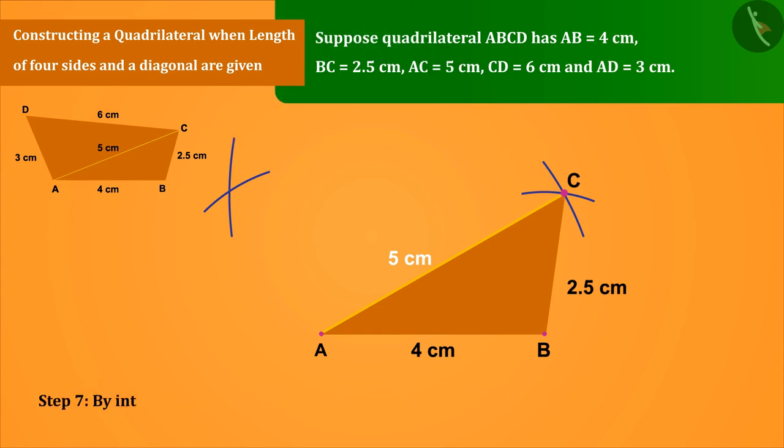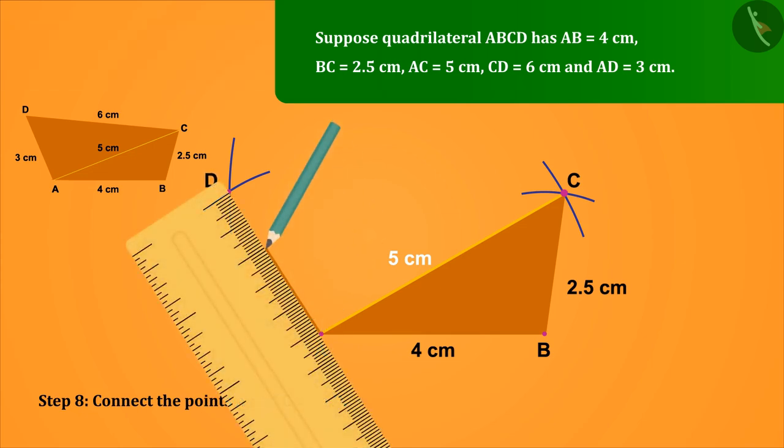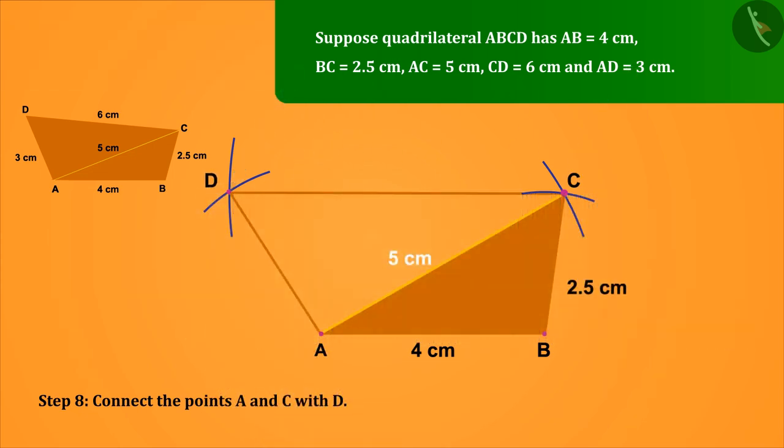By intersecting both arcs, we get a point which we nominate with D. Connect the points A and C with D. AD equals 3 cm and CD equals 6 cm.